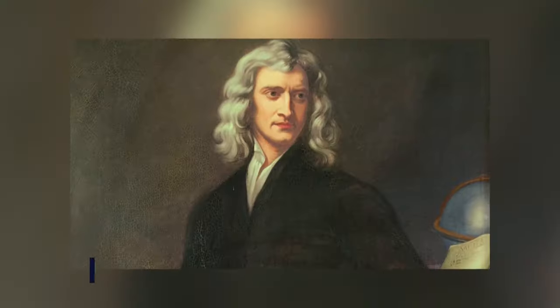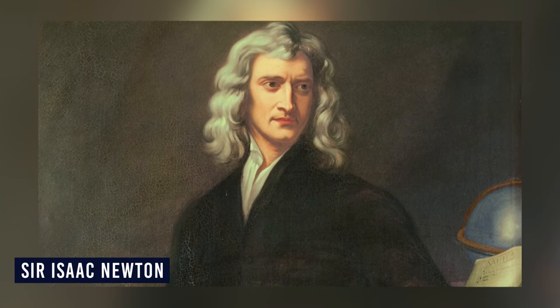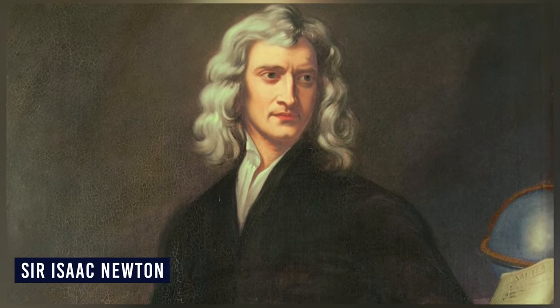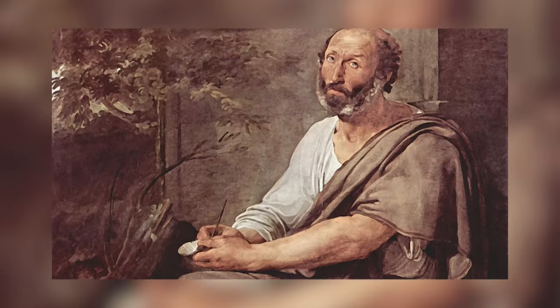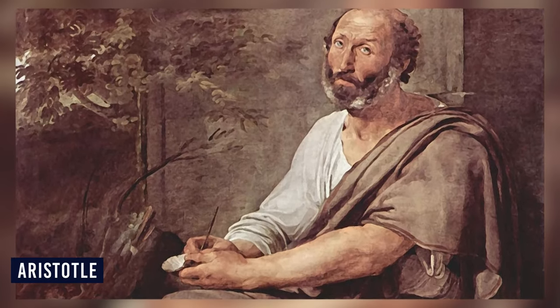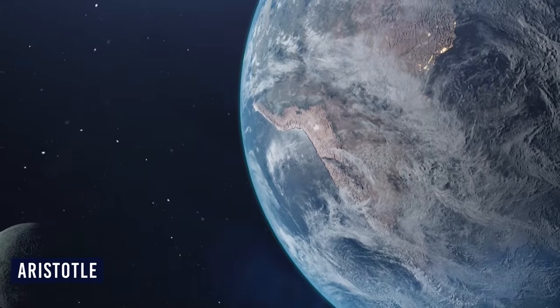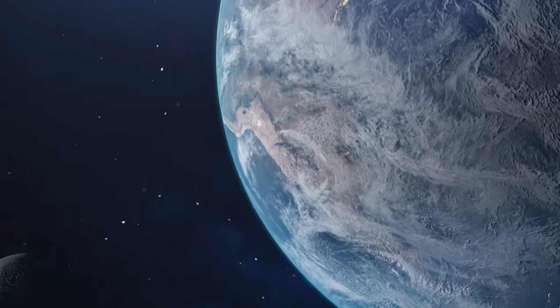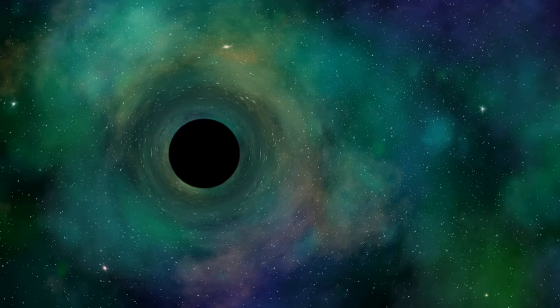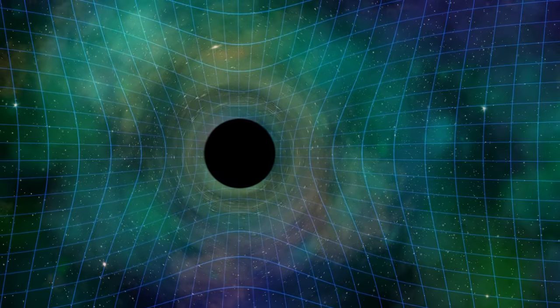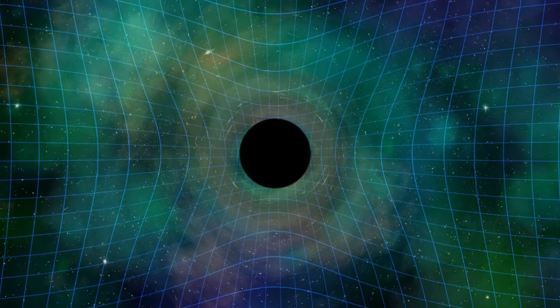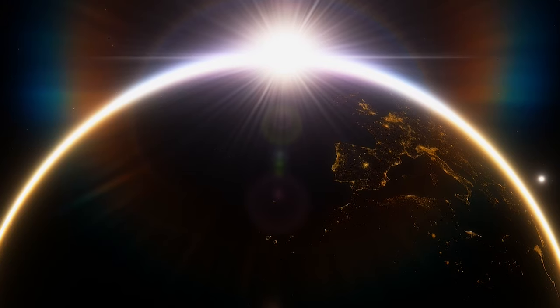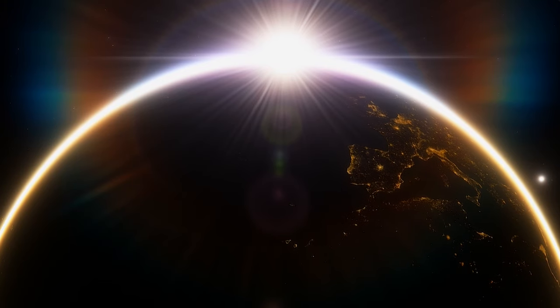While many credit Sir Isaac Newton for the discovery of gravity, ancient Greek philosophers explored the concept of gravity. For example, Aristotle proposed that objects fall towards the Earth because it is their natural place. However, in 1687, Sir Isaac Newton's groundbreaking work on the law of universal gravitation laid the foundation for modern physics and our understanding of gravity.